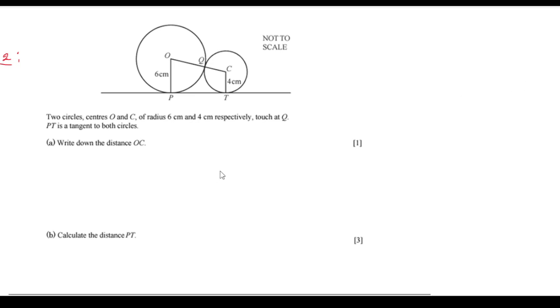Now, here in this question, two circles with center O and C of radius 6 and 4 centimeter respectively are given. They are touching at point Q, PT is tangent. We have to write down the distance OC.